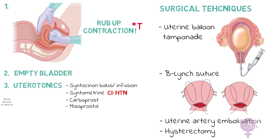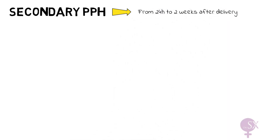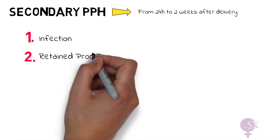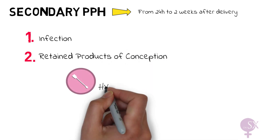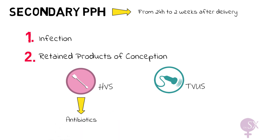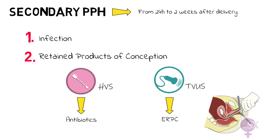Secondary PPH occurs from 24 hours to two weeks after delivery. Causes include infection or retained products of conception. To investigate, we perform a high vaginal swab to check for infections and a transvaginal ultrasound to check for retained products. If infection is identified we cover with antibiotics, while retained products of conception are managed with an ERPC — evacuation of retained products of conception.